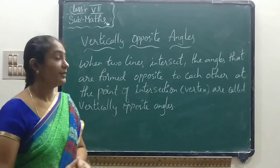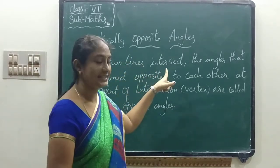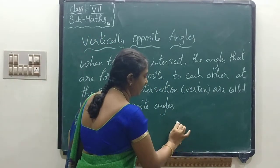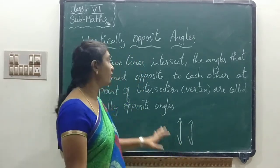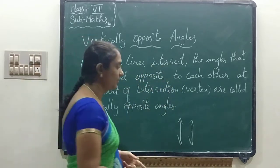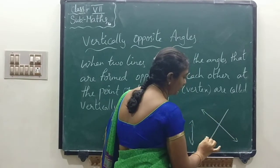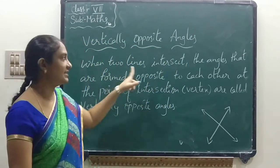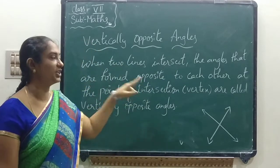Let us see the definition for vertically opposite angles. When two lines intersect — intersect means they have to join — and the angles are formed opposite to each other.